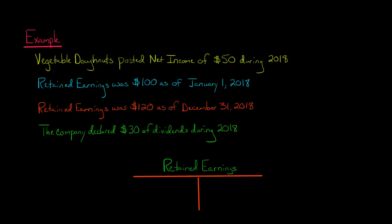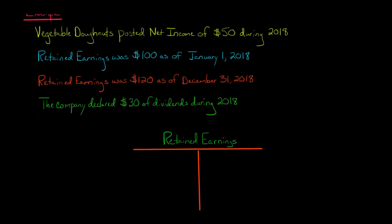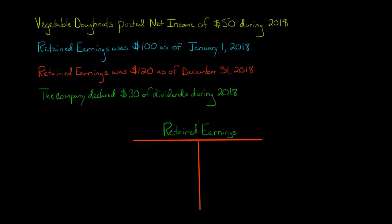So our beginning balance is $100. Let's set up this T account. So we've got $100, and then we get to $120, and we have $50 of net income that occurs during the period.